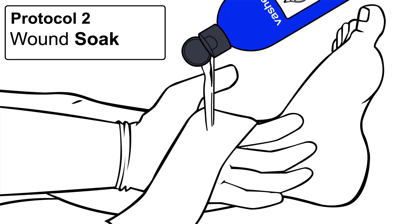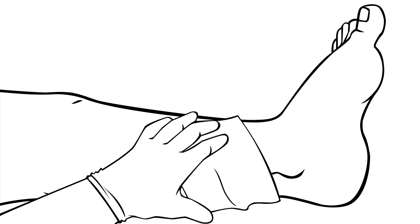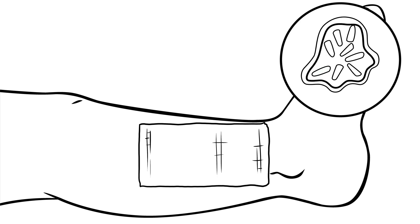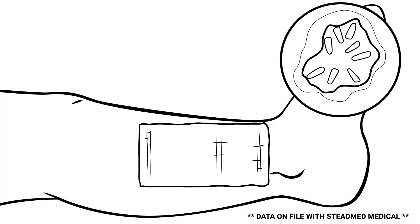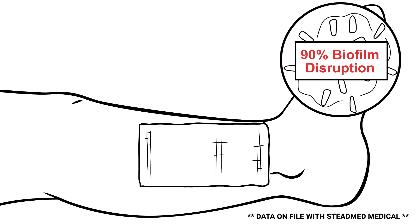Vosh can be used as a wound soak. Apply gauze dressing saturated with Vosh directly to wound and soak for approximately five minutes. Laboratory studies have shown a five-minute soak with Vosh has the ability to disrupt 90% of biofilms.